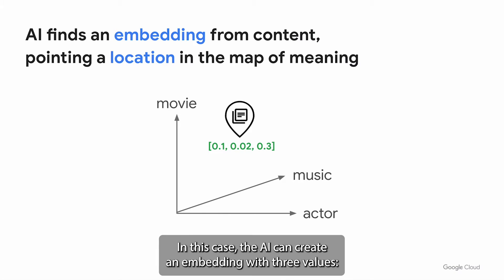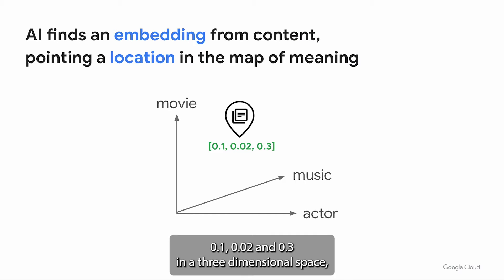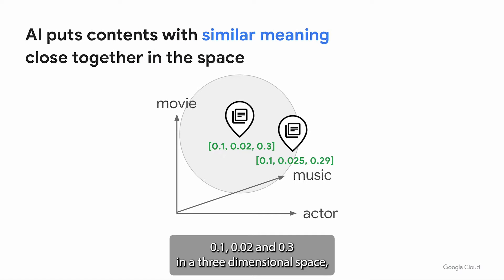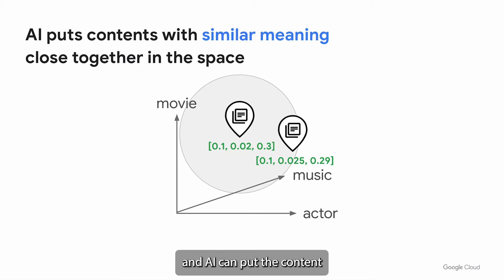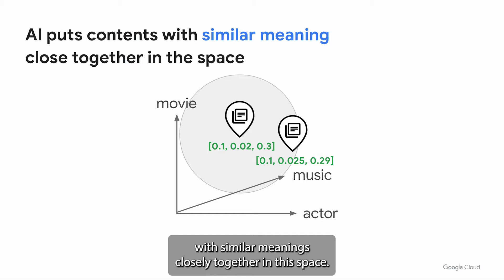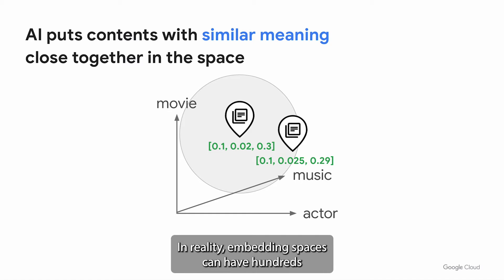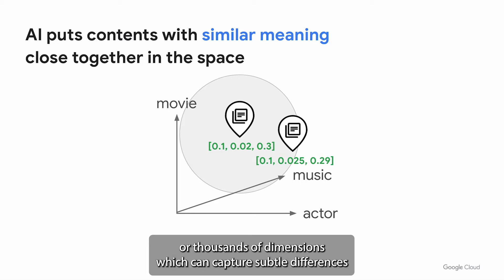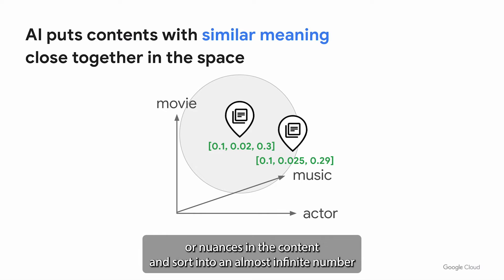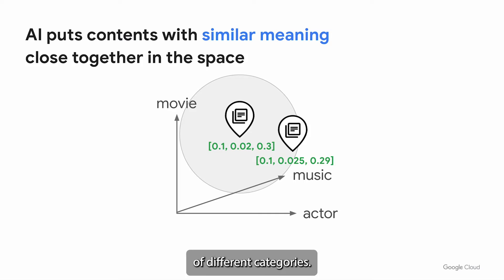the AI can create an embedding with three values — 0.1, 0.02, and 0.3 — in three-dimensional space. AI can put content with similar meanings closely together in this space. Keep in mind that this is a simplified example for illustrative purposes. In reality, embedding spaces can have hundreds or thousands of dimensions, which can capture subtle differences or nuances in the content and sort it into an almost infinite number of different categories.